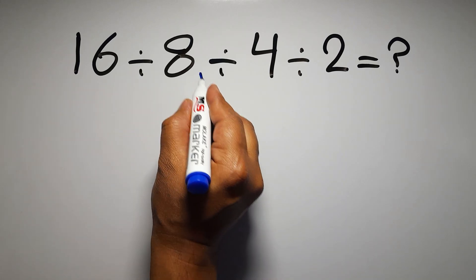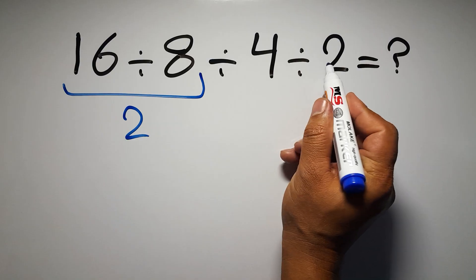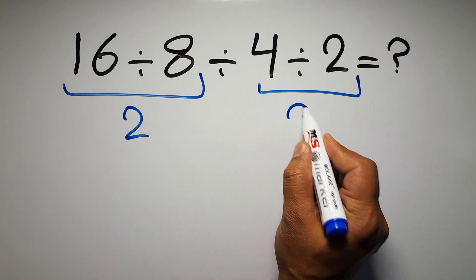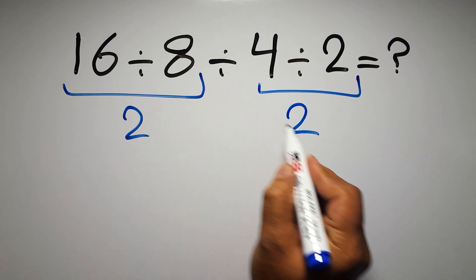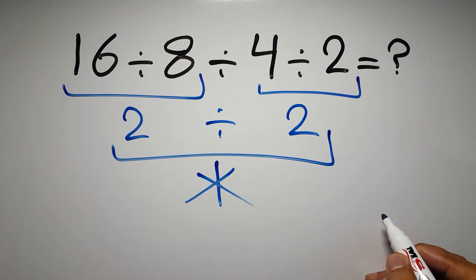16 divided by 8 gives us 2, and here we have 4 divided by 2 which equals 2, so 2 divided by 2 gives us 1. But this answer is not correct because according to the order of operations, when...